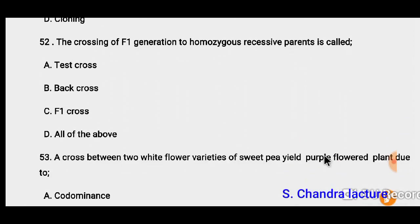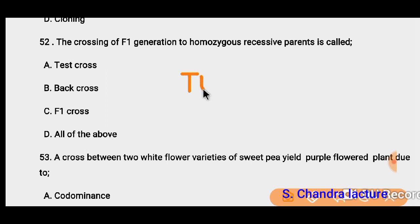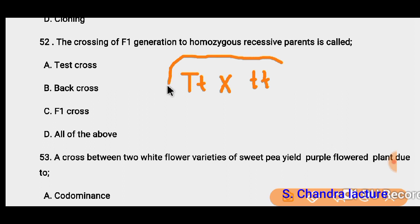Question 52: The crossing of F1 generation to homozygous recessive parents is called a test cross. For example, suppose F1 generation is capital T and small t. If we cross it with a recessive individual (small t, small t), that type of cross is a test cross.